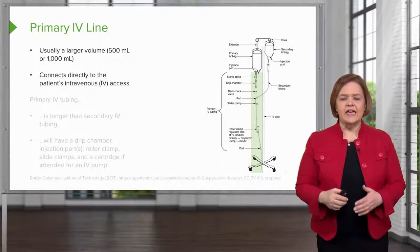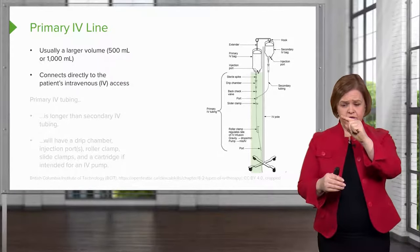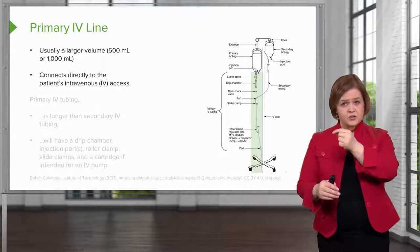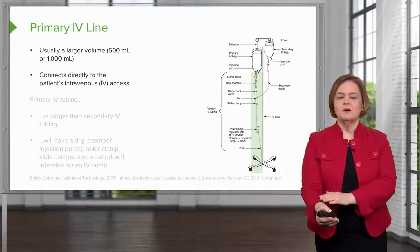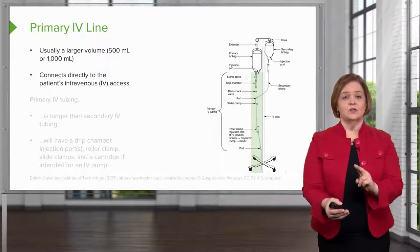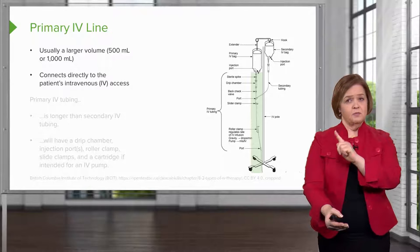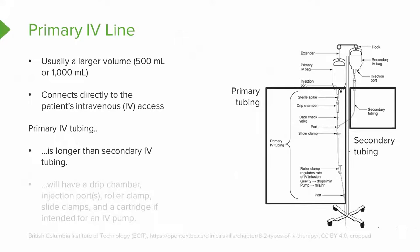The bigger bag connects directly to the patient's IV line. You follow the primary bag, the fluid, the tubing, all the way down — it connects right to the patient. The primary line has a larger volume and a longer line going from that bigger bag all the way down to the patient, because the primary tubing is longer than the secondary IV tubing. Look at the graphic — there's a much bigger box around the bigger bag and the primary tubing because it's longer, so it can connect easily right to the patient.